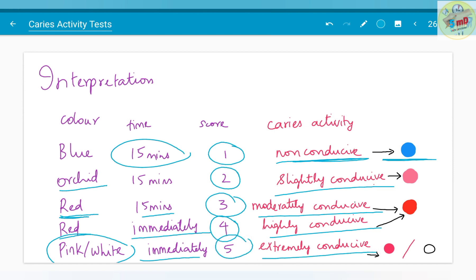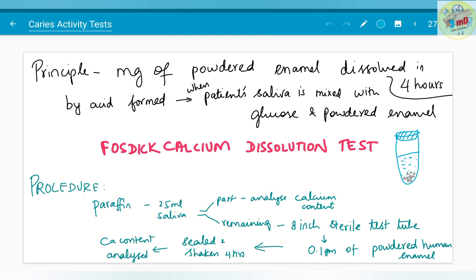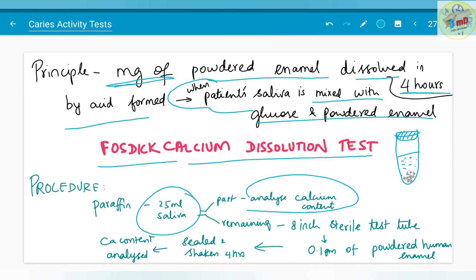The next test is Phosidic calcium dissolution test. This test works by the principle which determines the milligram of powdered enamel which is dissolved in 4 hours by the acid formed when patient's saliva is mixed with glucose and powdered enamel. The procedure is as follows: 25 ml of saliva is collected which is paraffin stimulated, and one part is used to analyze the calcium content already present.